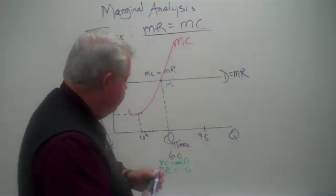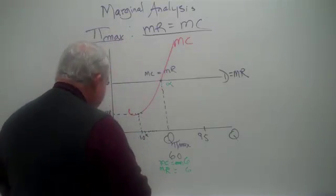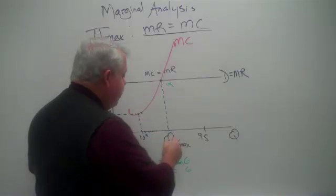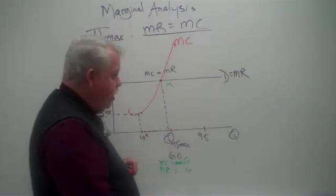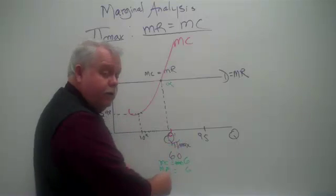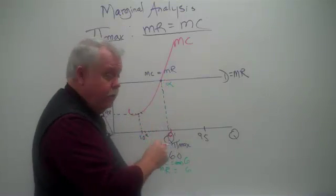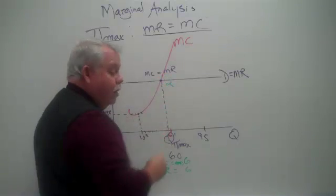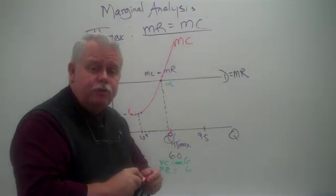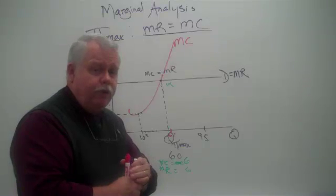Here's my next question, though. What happens if this company moves on and produces 61 units? When they produce unit number 61 and we read up, we'll see that the marginal revenue is less than the marginal cost. They're going to lose money on that unit, so they should not produce it.